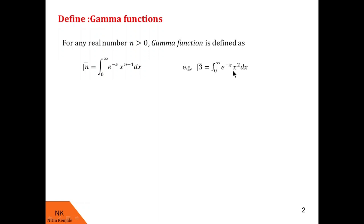Note that here the power of x is 1 less than the number in the gamma notation on the LHS. This form of the gamma function we call the first form of the gamma function.